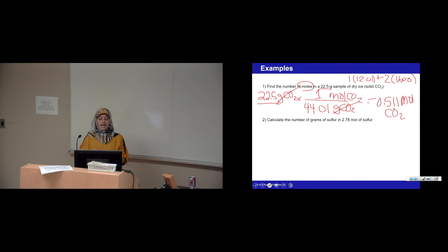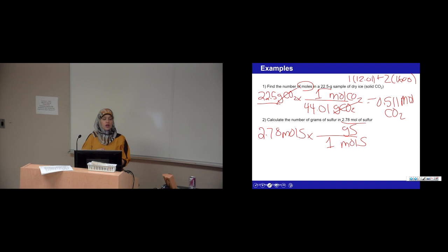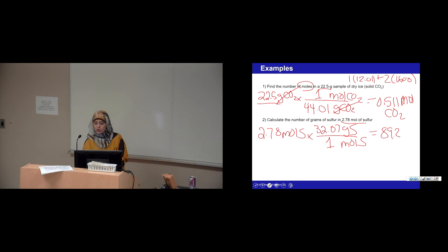Now let's do the reverse: calculate the number of grams of sulfur in 2.78 moles of sulfur. Always begin with what you were given: 2.78 moles of sulfur. Go from moles of sulfur to grams. One mole of sulfur is 32.07 grams — just look at the number under sulfur on the periodic table. So 2.78 times 32.07, rounded to three significant figures, gives 89.2 grams of sulfur.